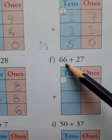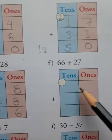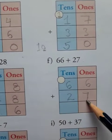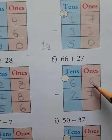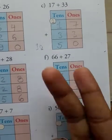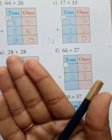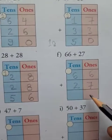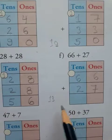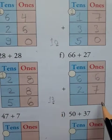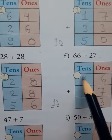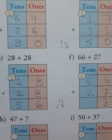Next one is 66 plus 27. Write 66 and 27. First of all, you add the ones: 6 plus 7 — 7, 8, 9, 10, 11, 12, 13. So 6 plus 7 is equal to 13. And 3 is in the ones place, so you write 3 here. And this 1 is in the tens place, so you carry over to the tens place.